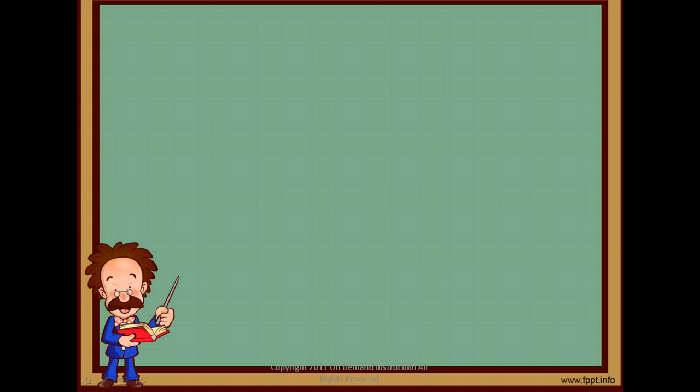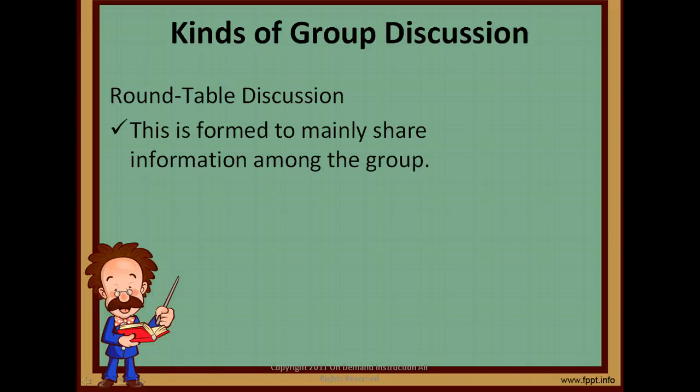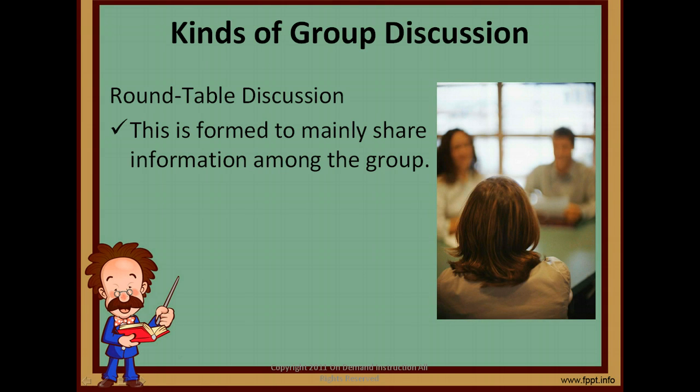Another is the round table discussion group. This is formed to mainly share information among the group. This term was derived from King Arthur and his knights when they met to discuss their quests. This discussion is usually a preliminary discussion held when fact-gathering is needed before a formal discussion.